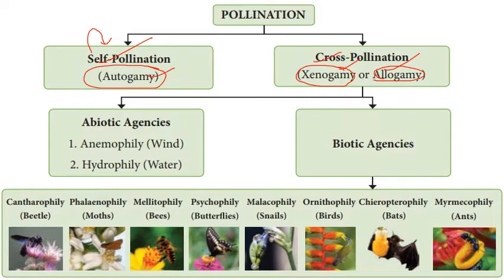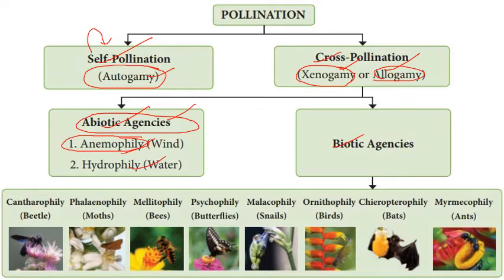Cross-pollination is done with the help of certain agencies, which are of two types: abiotic agencies and biotic agencies. Abiotic agencies include non-living agents like air and water. Pollination by air is known as anemophily, and pollination by water is known as hydrophily. We will discuss these in detail.